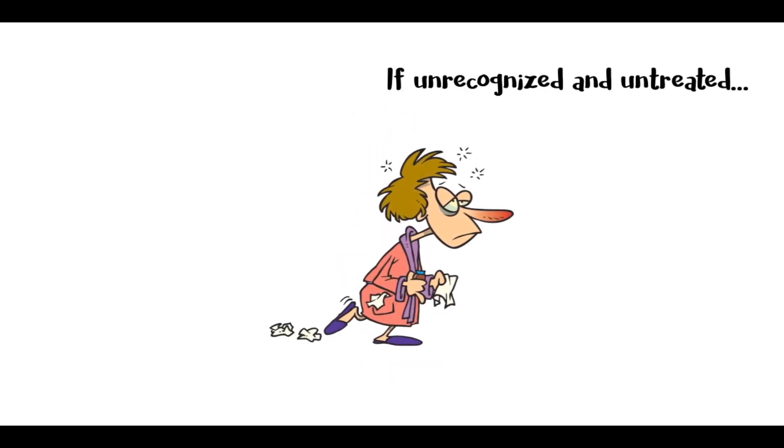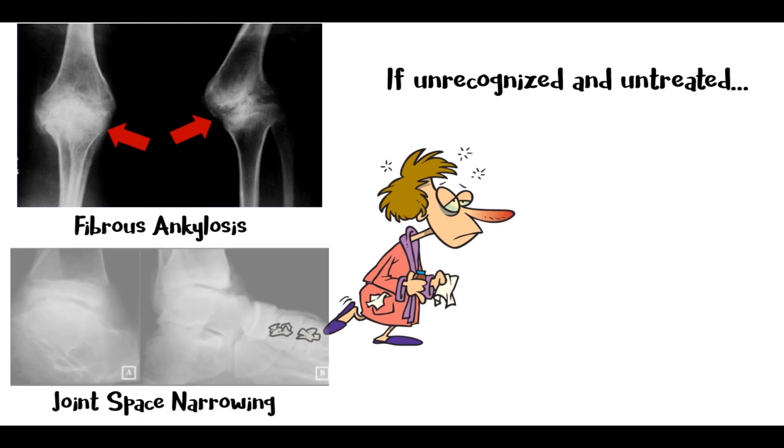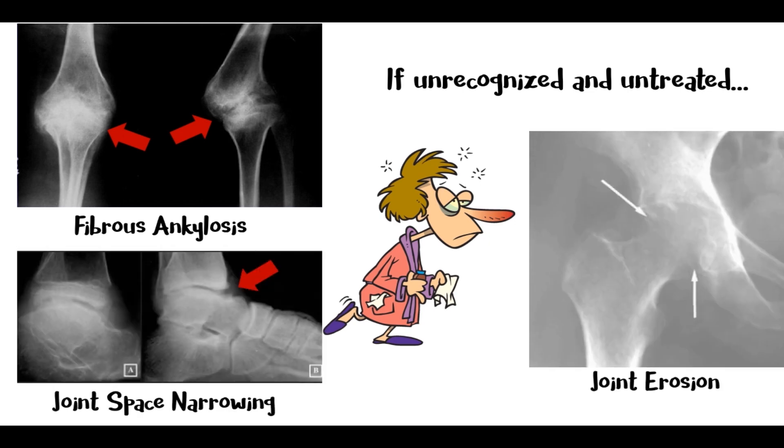On the other hand, unrecognized or untreated TB arthritis can result in fibrous ankylosis, which is a proliferation of fibrous tissues that reduces range of motion, joint space narrowing, and bony erosions. Eventually, this will result in joint destruction.